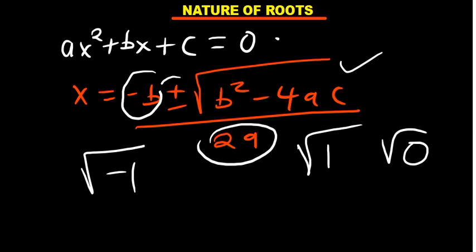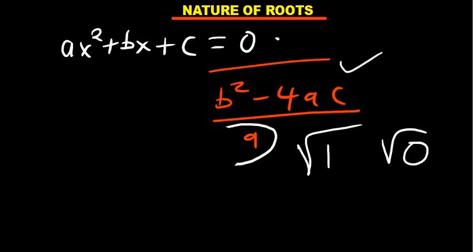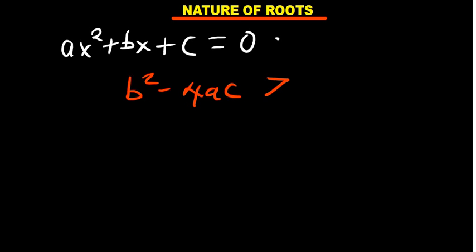In the normal case, we expect two different solutions after adding or subtracting the square root value. What is below the square root is called the discriminant: b squared minus 4ac. The discriminant is what determines the nature of the roots. If b squared minus 4ac is greater than 0, it has real meaning — you can find its value with a calculator.